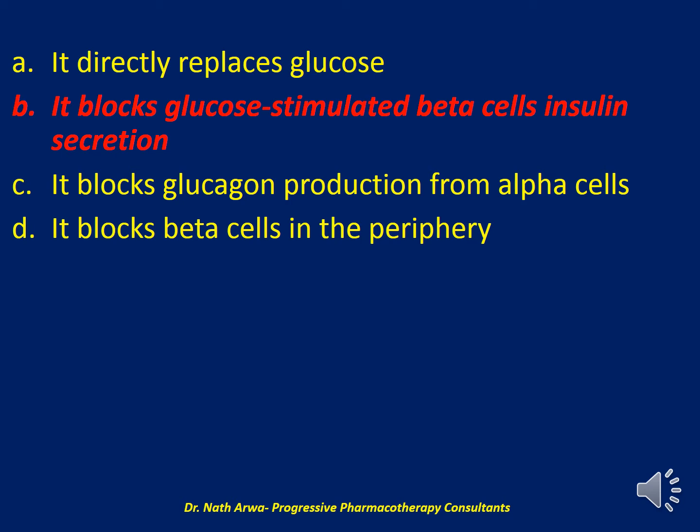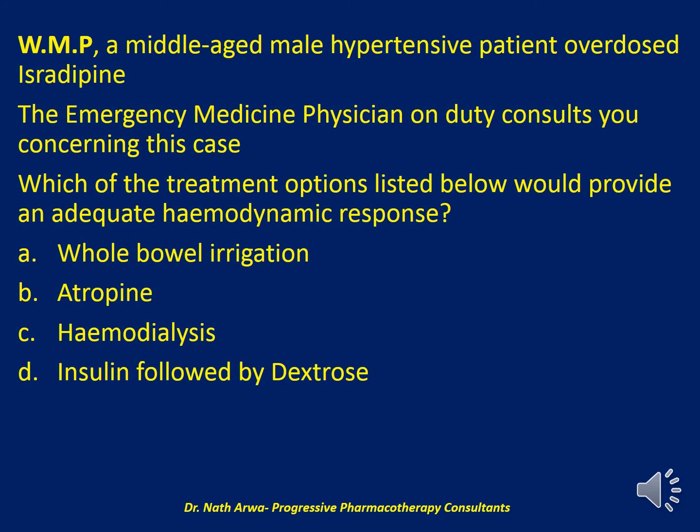The next question reads: Mr. WMP, a middle-aged male hypertensive patient, overdosed on isradipine. The emergency medicine physician on duty consults you concerning this case. Which of the treatment options listed below would provide an adequate hemodynamic response? Would you recommend whole bowel irrigation, administer atropine, settle for hemodialysis, or advise them to infuse insulin followed by dextrose? I'll give you 10 seconds to choose the correct answer.